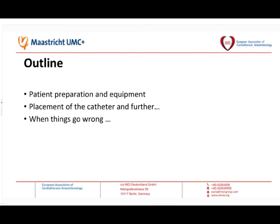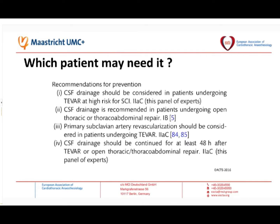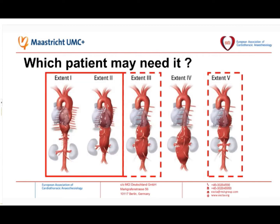Which patient may need CSF drainage? We had a lot of discussion about indications, recommendations, meta-analyses and reviews. In our hospital, we follow the ACTS guideline from 2016, which says that CSF drainage should be considered in patients undergoing TIVA at high risk. We take patients with a Crawford 1 or 2 aneurysm as high risk, and these patients will get a CSF drain preoperatively before the procedure starts. There is discussion about patients with Crawford 3 and the Crawford 5 extension, which was described for the first time in 2012.